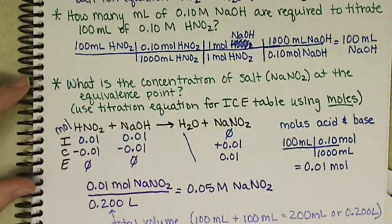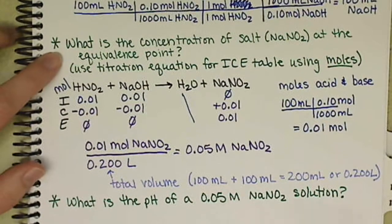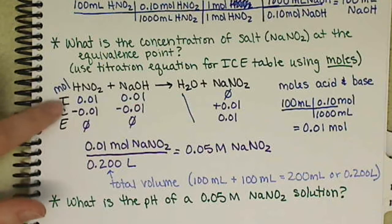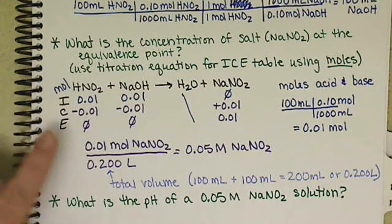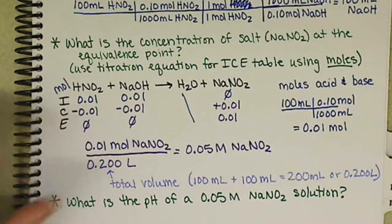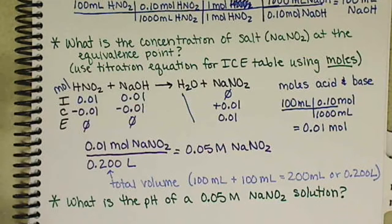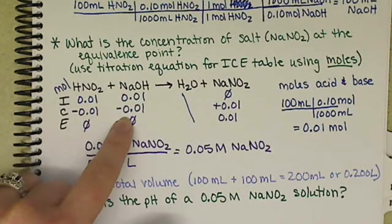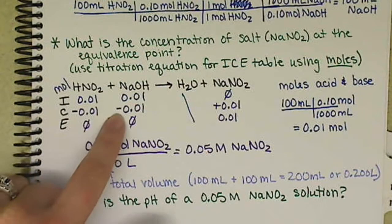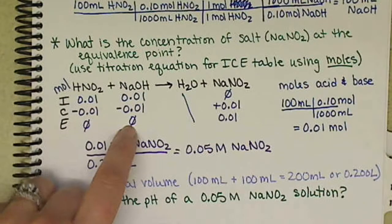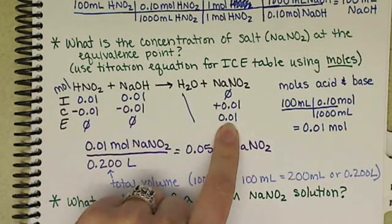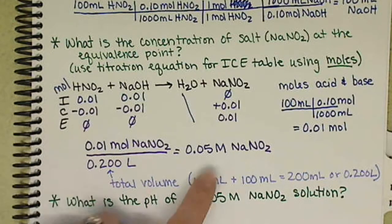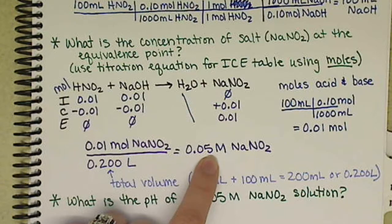Then our next question was we wanted to ask ourselves what is the concentration of the salt at the equivalence point. And we set up our ICE table using the titration equation, and we need to put it in moles because we have two different volumes. Our change was all of it reacts, all of our acid and all of our base reacts so that we get none in the end. That gives us our moles of NaNO2 divided by our total volume, 0.2 liters, to get a concentration of our salt of 0.05 molar.